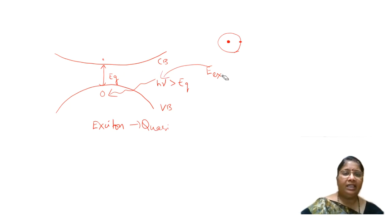EEX plus EG will actually be equal to H nu, meaning your exciton energy will be very much less than this EG. The energy of this exciton will be far lesser than the energy of the surrounding.